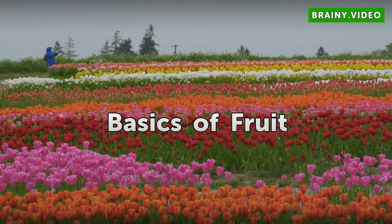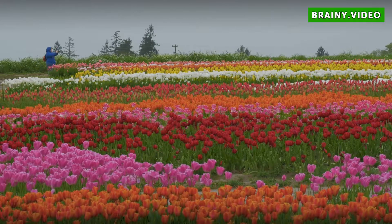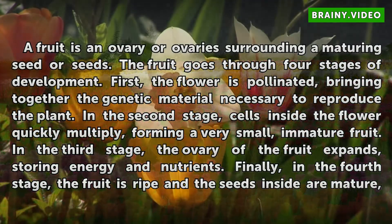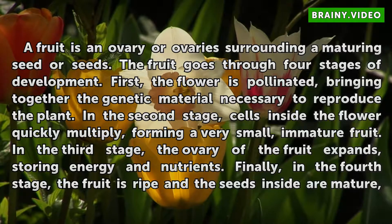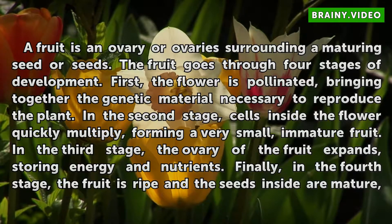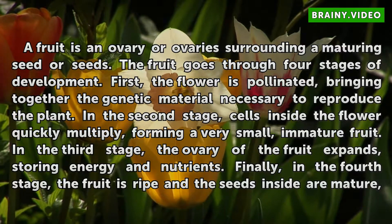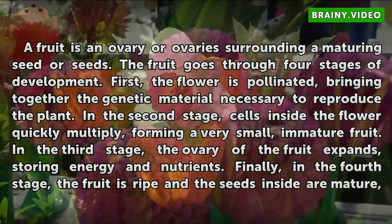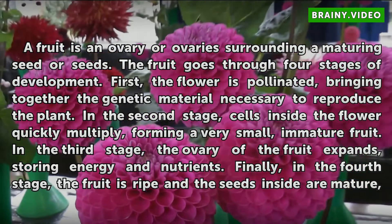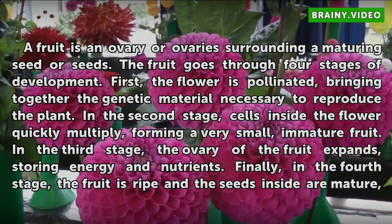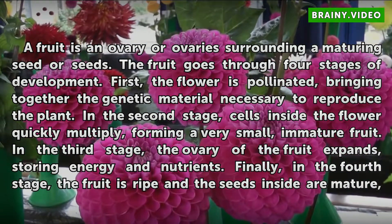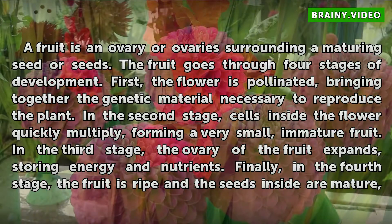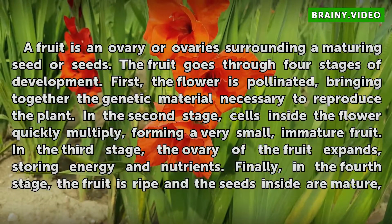A fruit is an ovary or ovaries surrounding a maturing seed or seeds. The fruit goes through four stages of development. First, the flower is pollinated, bringing together the genetic material necessary to reproduce the plant. In the second stage, cells inside the flower quickly multiply, forming a very small, immature fruit.